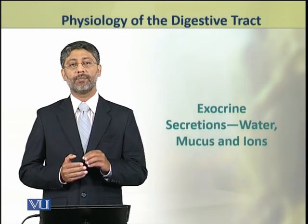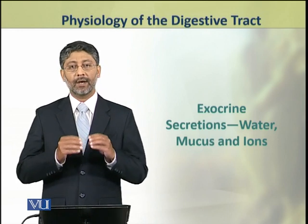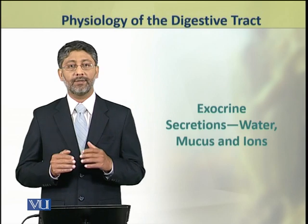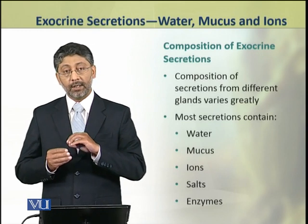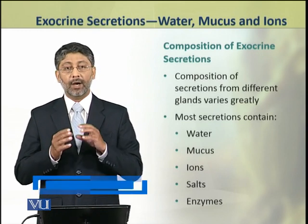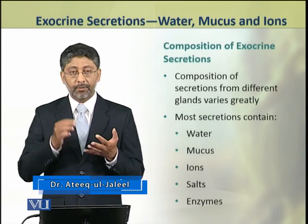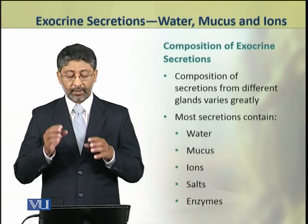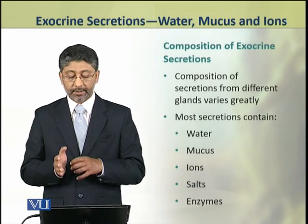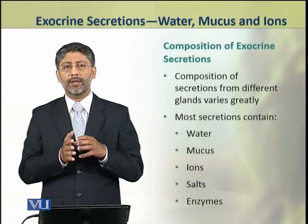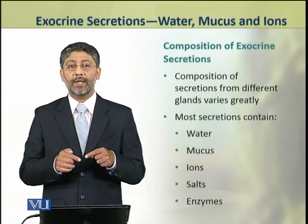Dear students, in this topic we shall discuss the water, mucus, and ion constituents of exocrine secretions. The exocrine secretions are composed mainly of water, mucus, ions, salts, and enzymes. Although their proportion varies in the secretions secreted by different glands, most of the secretions of these exocrine glands contain these components.